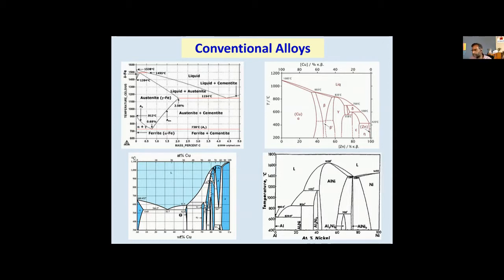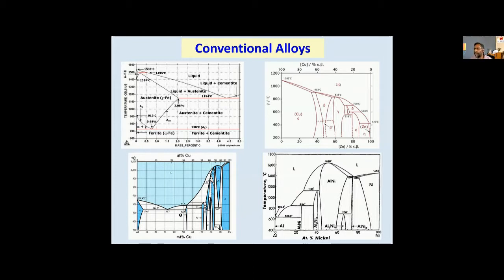Most mechanical engineers and metallurgists are aware of this — it is the bread and butter of most metallurgists. Steel is the most prominent alloy that everybody knows about, and the whole understanding of steels comes from this phase diagram. On the top right is the copper-zinc phase diagram — that's where brasses come from. At the bottom is an aluminum-copper phase diagram, very important because the whole concept of duralumin and precipitation hardening comes from it. Similarly, there is an aluminum-nickel phase diagram, which is a very important system because the so-called superalloys used in gas turbine engines all come from the nickel-aluminum system.